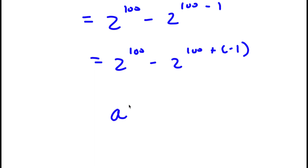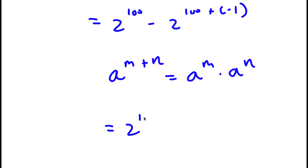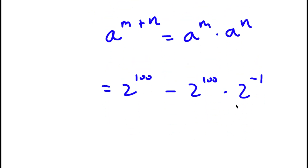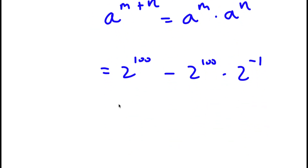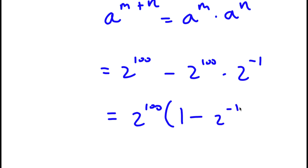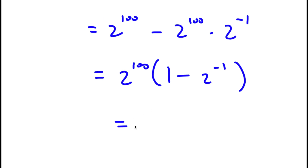Remember, if I have something in the form a to the power of m plus n, this is equal to a to the power of m times a to the power of n. So 2 to the power of 100 plus negative 1 is going to equal 2 to the power of 100 times 2 to the power of negative 1. Now if I factor out 2 to the power of 100, I get 2 to the power of 100 times 1 minus 2 to the power of negative 1. Now 2 to the power of negative 1 equals 1 half, so I have 2 to the power of 100 times 1 minus 1 half.